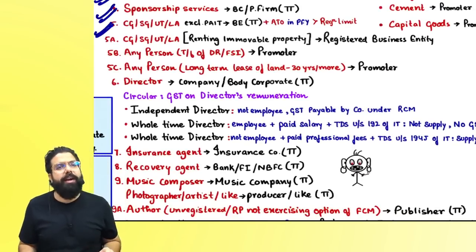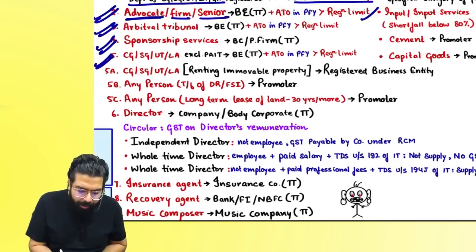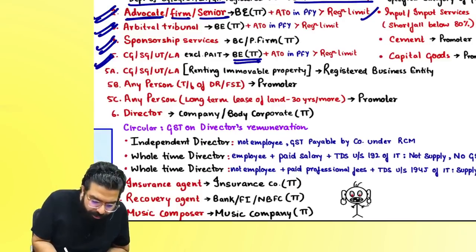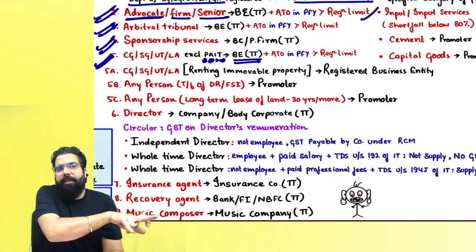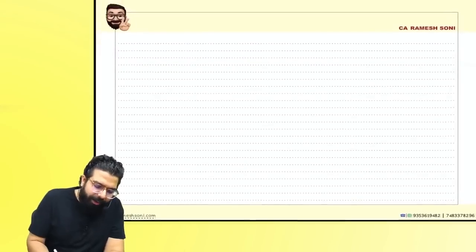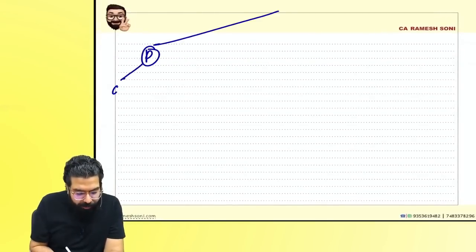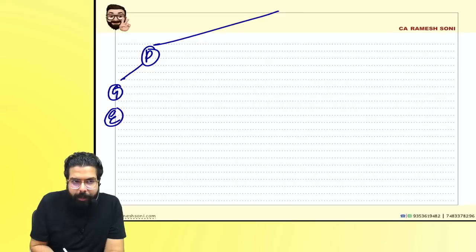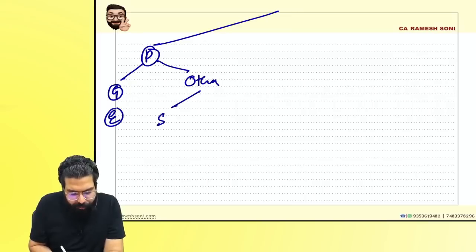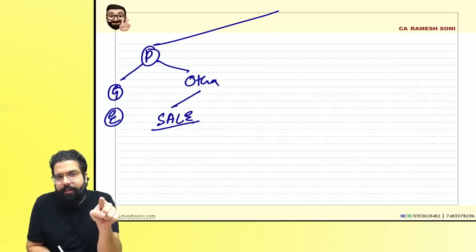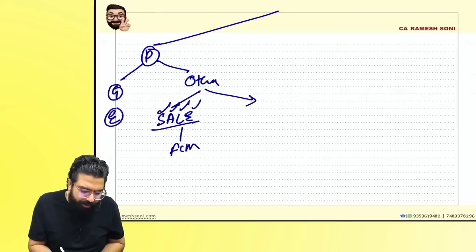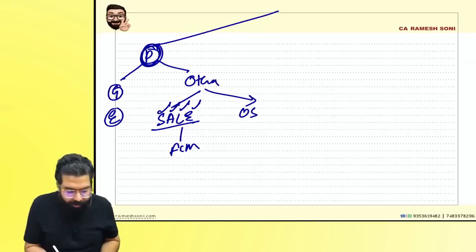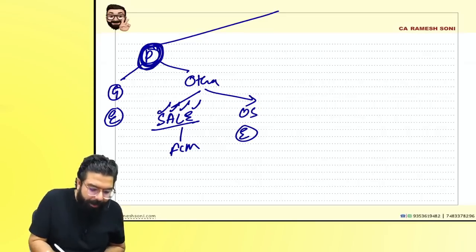If central government, state government, union territory government, or local authority provides services to a business entity in the taxable territory, RCM applies — except for four categories (PAIT): Post, Airport, Immovable property, and Transportation services. For Post (postal department): services provided to government are always exempted. Services by the postal department to others — speed post, agency service, life insurance, and express parcel are always forward charge. All other postal department services are always exempted. For Airport or port related services provided to a ship or vessel, forward charge applies. For transportation of goods or passengers, always forward charge. For immovable property: if provided to a registered person, RCM applies; to an unregistered person, forward charge.